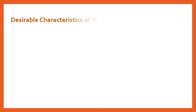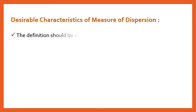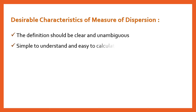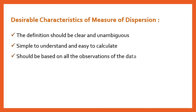Now the desirable characteristics of a measure of dispersion — just like in Chapter 3 we studied ideal characteristics for a measure of central tendency. First, the definition should be clear and unambiguous, meaning it should not have double meaning. Second, it should be simple to understand and easy to calculate.